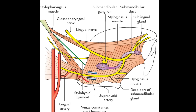Let's learn more about the submandibular ganglion. The submandibular ganglion is a parasympathetic ganglion which serves as a relay center for secretomotor fibers supplying the submandibular and sublingual salivary glands. It is topographically related to the lingual nerve but functionally related to the facial nerve via chorda tympani.